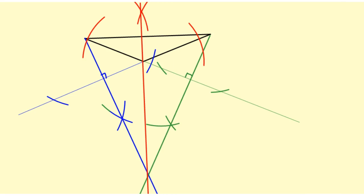Notice that all three of those altitudes had to be extended to find the point at which they all intersect. This point is called the orthocenter. The orthocenter for an obtuse triangle will always be outside in the exterior of the triangle.